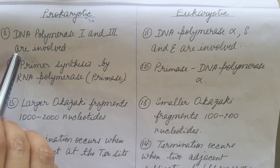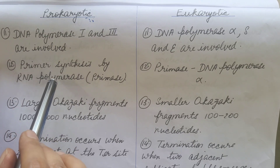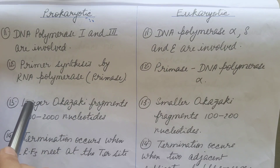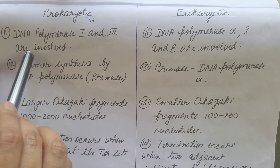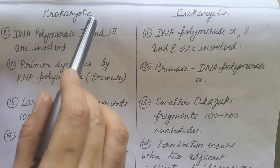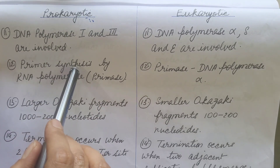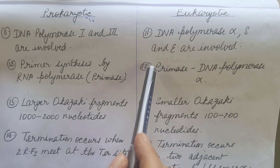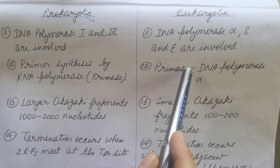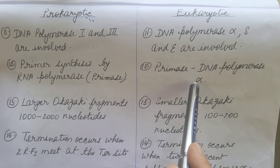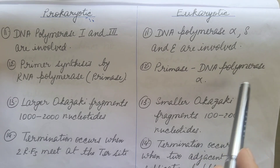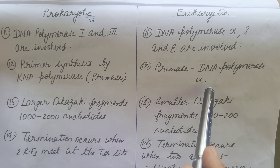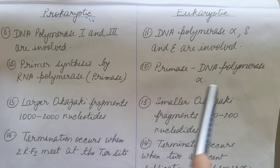For the synthesis of the new strand, a primer is required because DNA polymerase cannot initiate synthesis — it requires a 3'-OH group, which is provided by the primer. In prokaryotes, the primer is synthesized by RNA polymerase — primase. In eukaryotes, primase is DNA polymerase alpha, which has multiple subunits; two subunits serve as primase and synthesize the RNA primer.